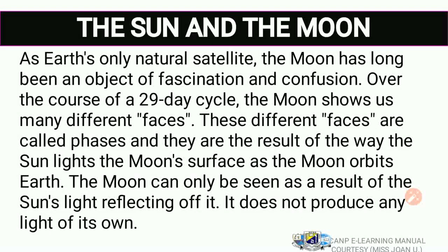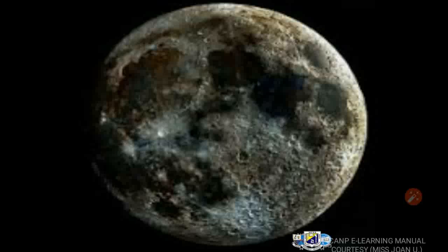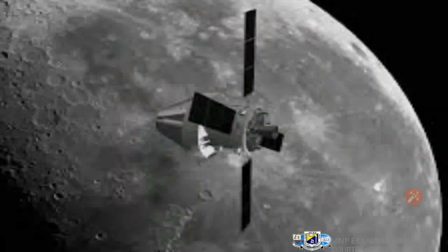The Moon can only be seen as a result of the Sun's light reflecting off it. We can only see the Moon when light is shining on it — it does not produce any light of its own. So typically what we are seeing when you see the Moon is the sunlight shining on the Moon and the Moon reflecting that light back to Earth. If you look closely at the Moon, you can see it's opaque — it looks more like an opaque body.